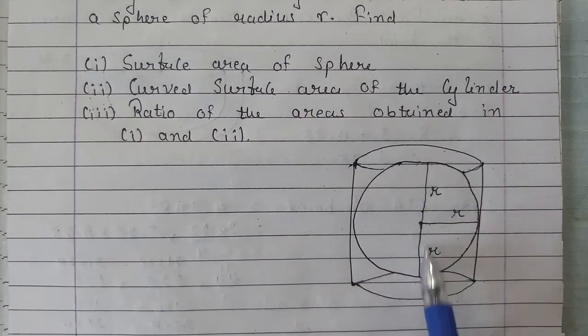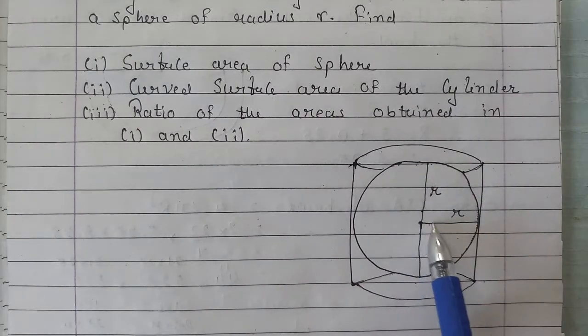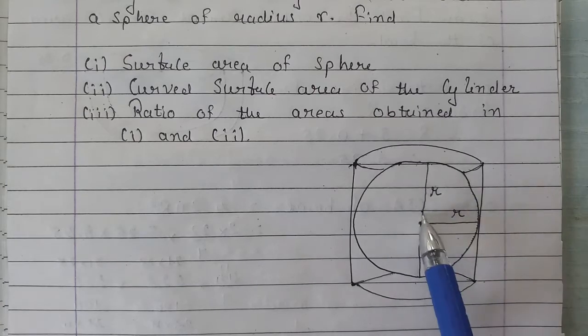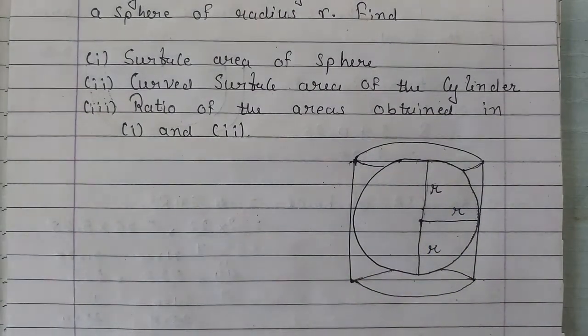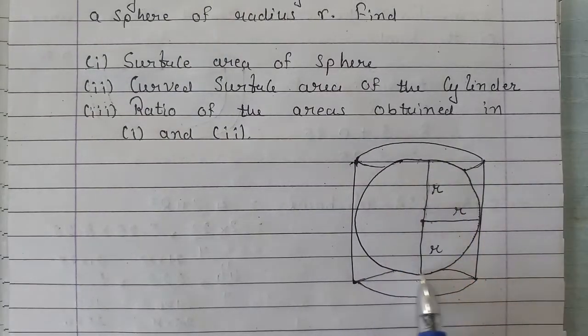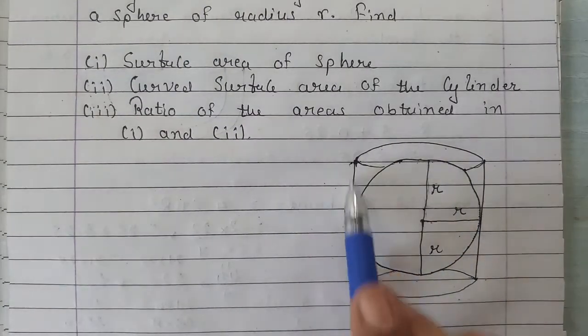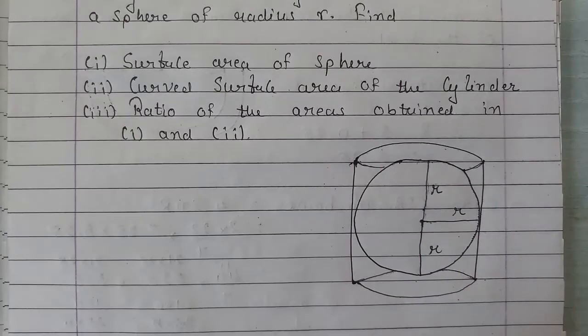The radius is r. That means the radius is r everywhere - here, here, and here. Now, just outside this sphere there is a cylinder. The cylinder's size is such that the entire sphere will fit inside the cylinder.